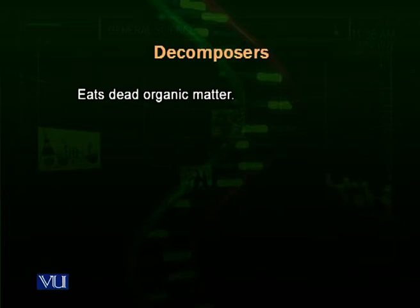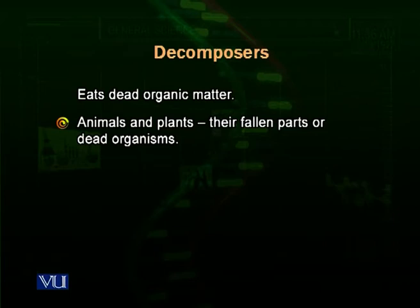Decomposers eat dead organic matter — animals and plants. Various plants shed their leaves and branches in the fall; these go into the soil. The decomposers — bacteria or fungi present in the soil — eat upon those dead organic materials and help the environment by converting those larger parts present in or on the soil, which are not available for nutrient acquisition by plants or animals, into smaller compounds.